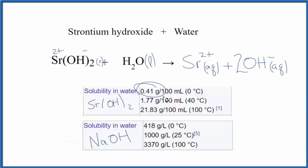It's going to break apart into its ions completely. So you put this in water, this much will dissolve for 100 milliliters at 0 degrees Celsius. All of that will dissociate into strontium ions and hydroxide ions.